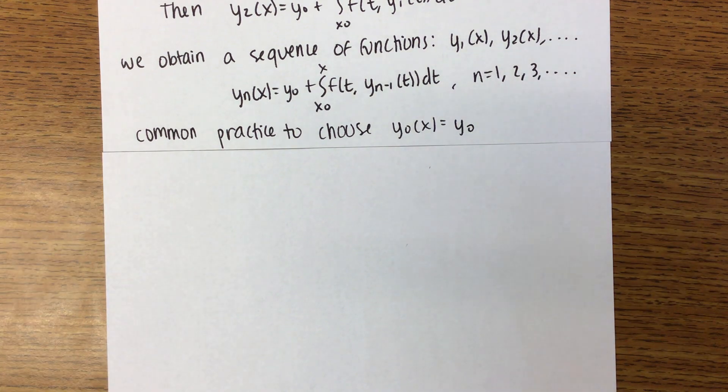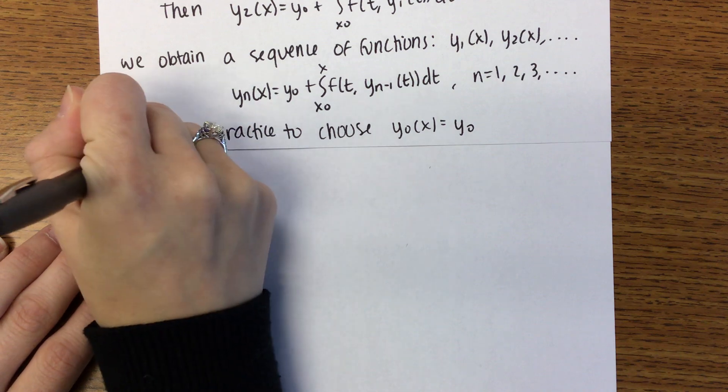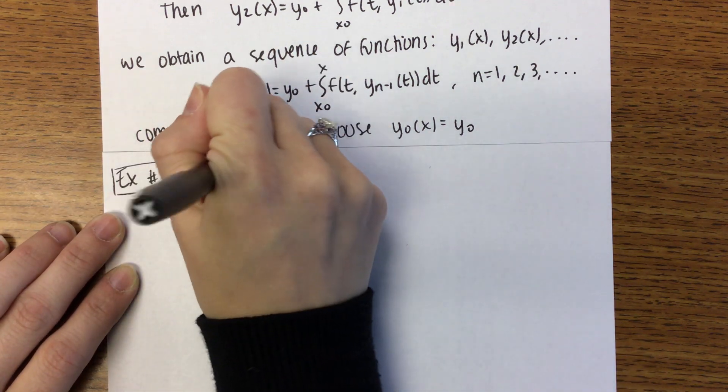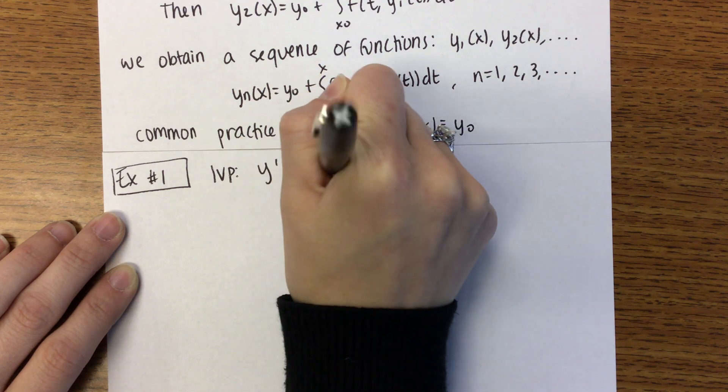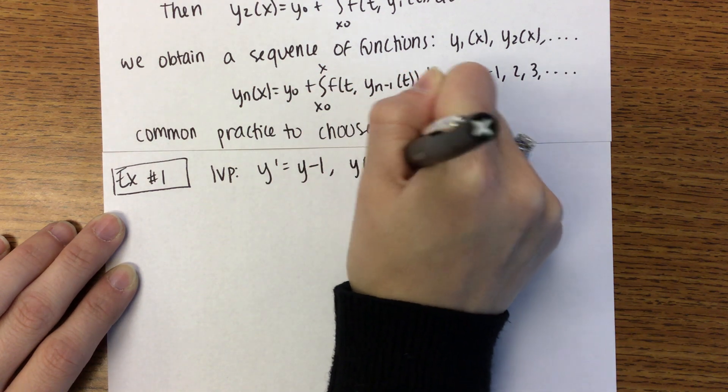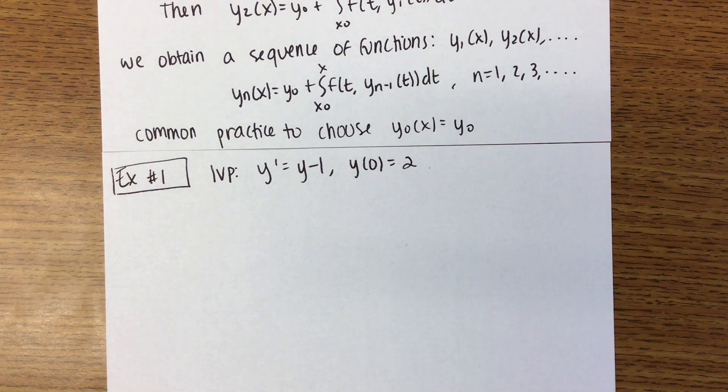We're just going to do an example so you guys can see how this works. You have the following initial value problem. Y prime is equal to Y minus 1 and Y of 0 equals 2. Now, could we theoretically solve this if we wanted to? Like not using Picard's method. Could we find an actual solution? And by what method?